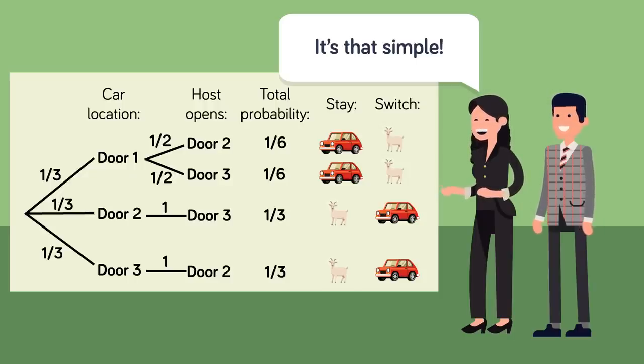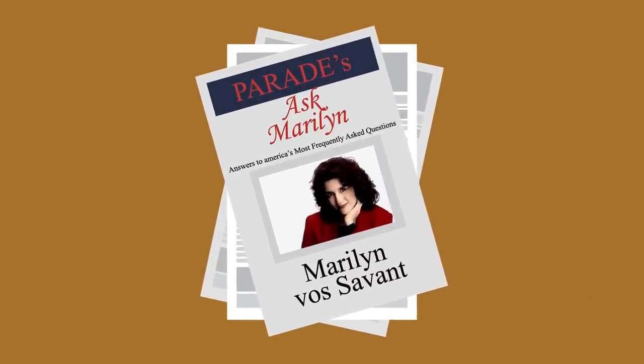Instead, the probability of the opened goat door having the car behind it is transferred only to the door that you do not select, which gives the unselected door a two-thirds probability that it has the car behind it. This solution revealed the Monty Hall paradox.